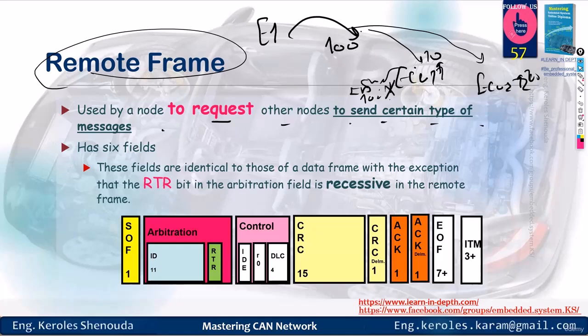ECU2 will say, I have nothing to do with 100. I wasn't sending with 100, so I won't send anything as software. However, ECU3 will realize, yes, right? I'm the one sending with the ID of 100. Hence, someone is asking me to send, so it proceeds to send the data frame with ID 0x100.